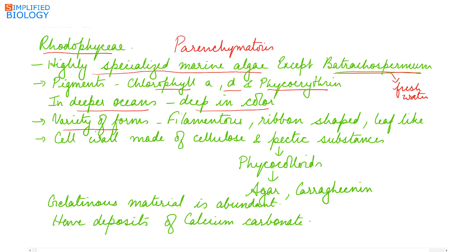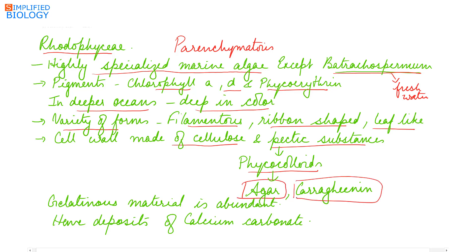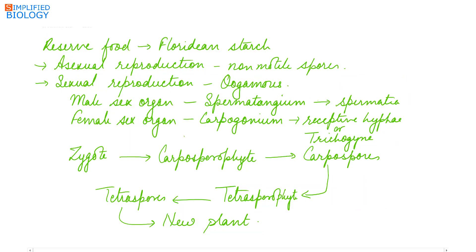Red algae occur in a variety of forms — filamentous, ribbon-shaped, and leaf-like. The cell wall is made up of cellulose and pectic substances, which contain phycocolloids, some of which contain sulfur, like agar, and carrageenan is also present. Gelatinous material is highly abundant, and they have deposits of calcium carbonate, which is why they form corals. Reserved food material is floridean starch, similar in structure to glycogen or amylopectin. Some pyrenoids are also present.